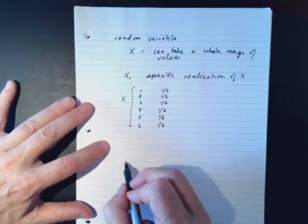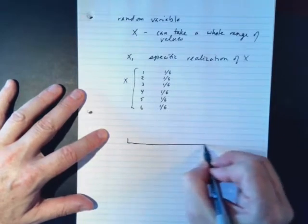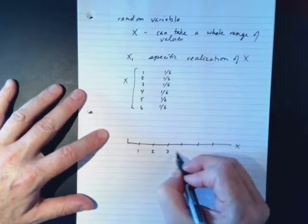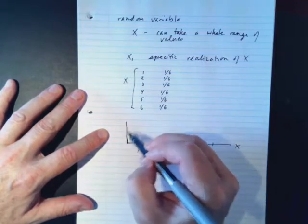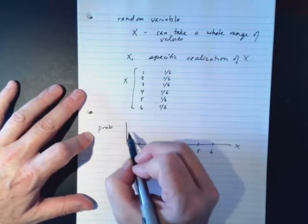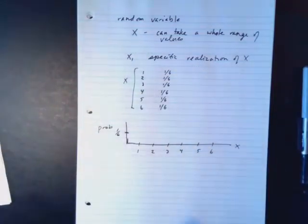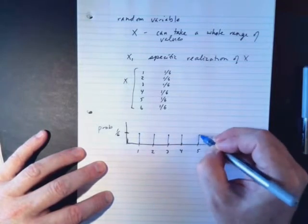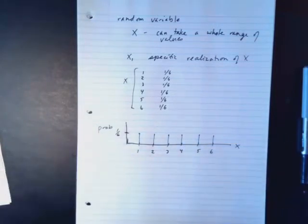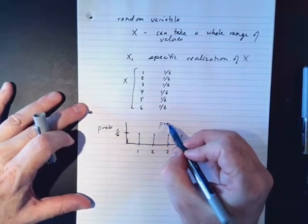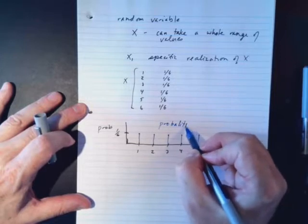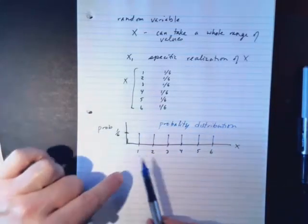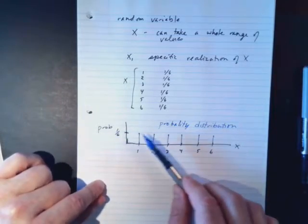If we graph this, we put x values 1 through 6 on the horizontal axis and probability on the vertical axis. It's always the same — it's 1/6 every time. So that's a very simple example of a probability distribution. You've got the range of possible values and the probability associated with each one. This is a discrete random variable — discrete meaning it can only take a countable number of values.